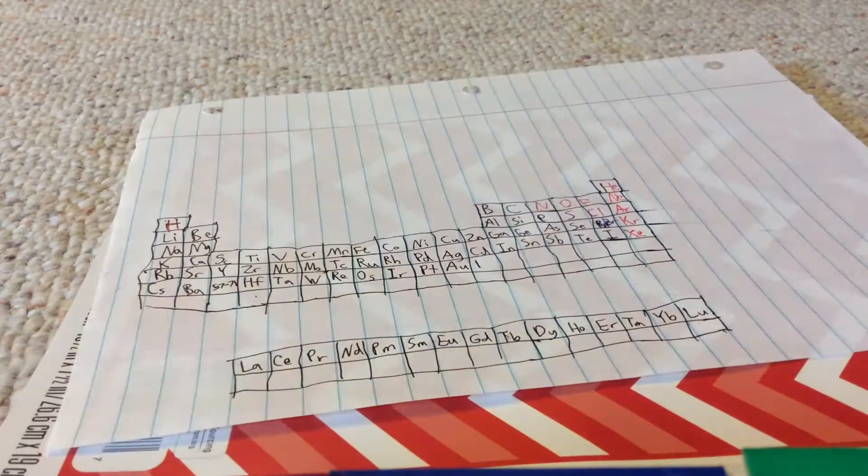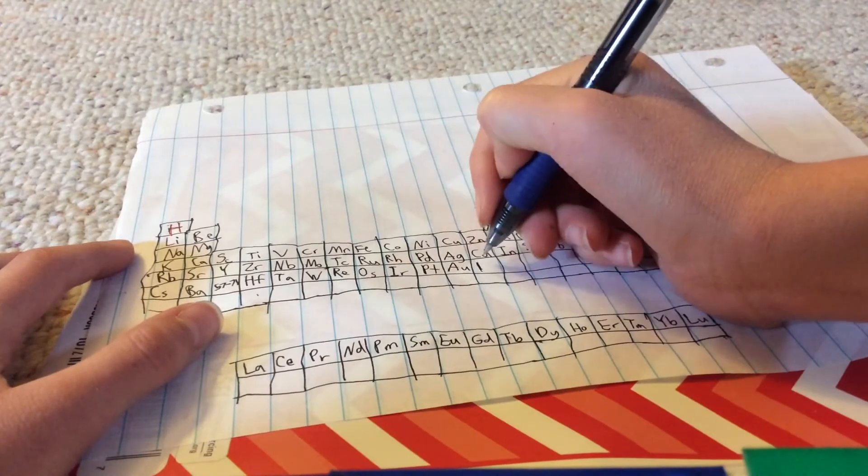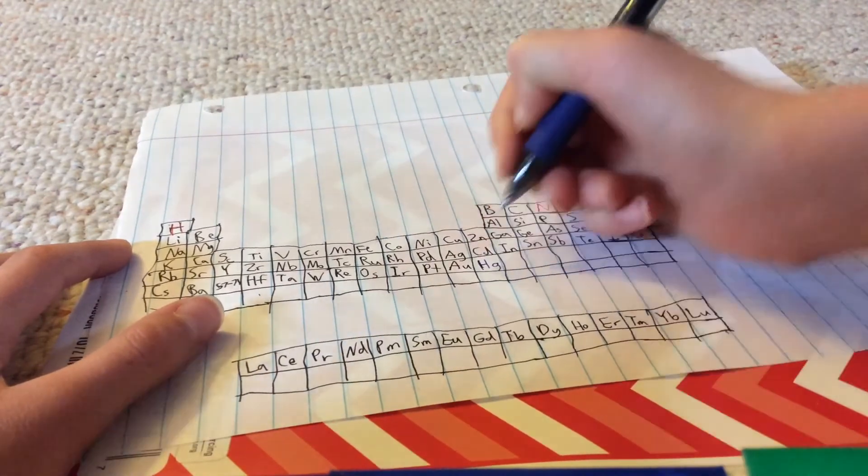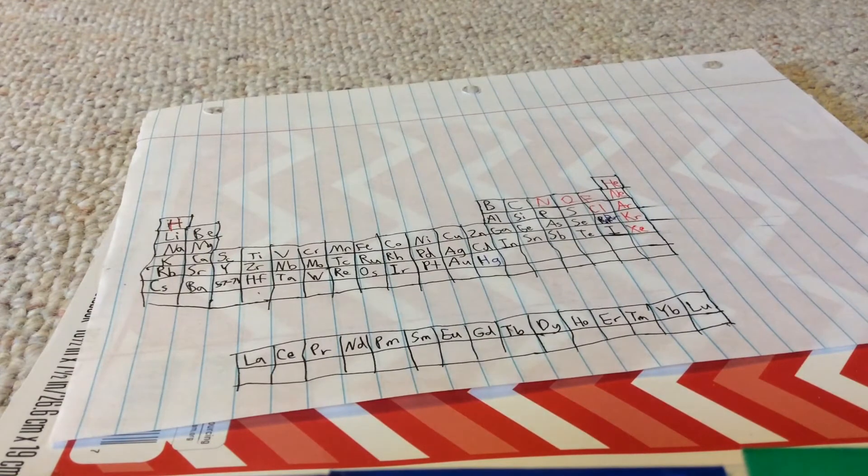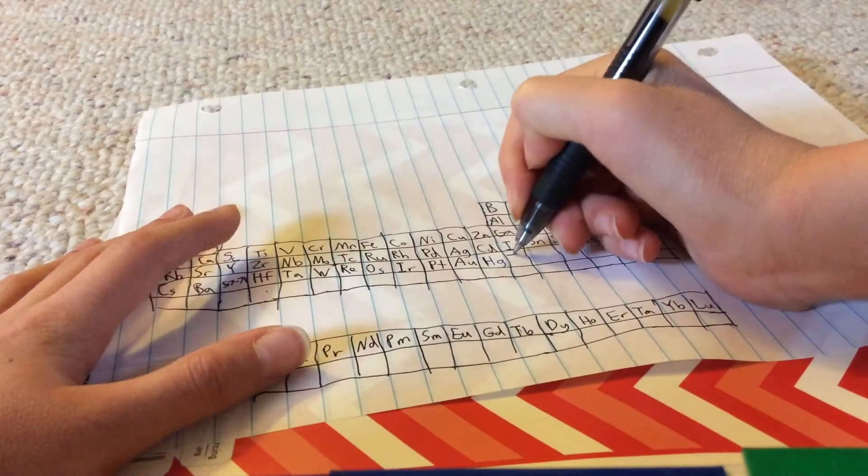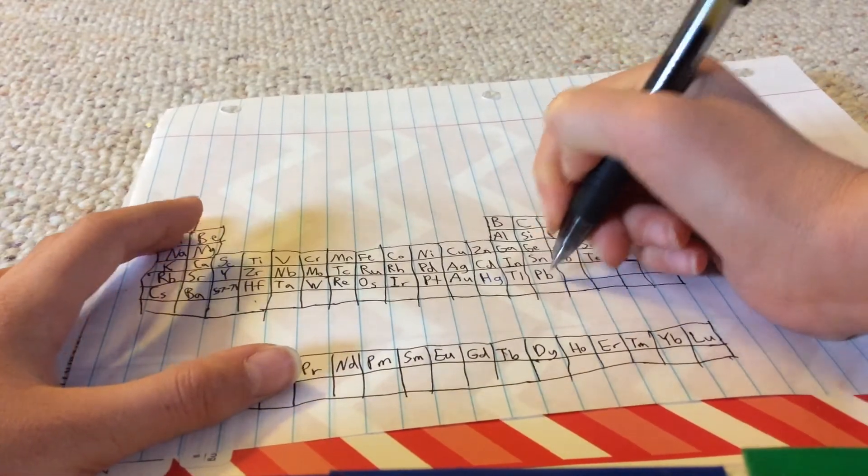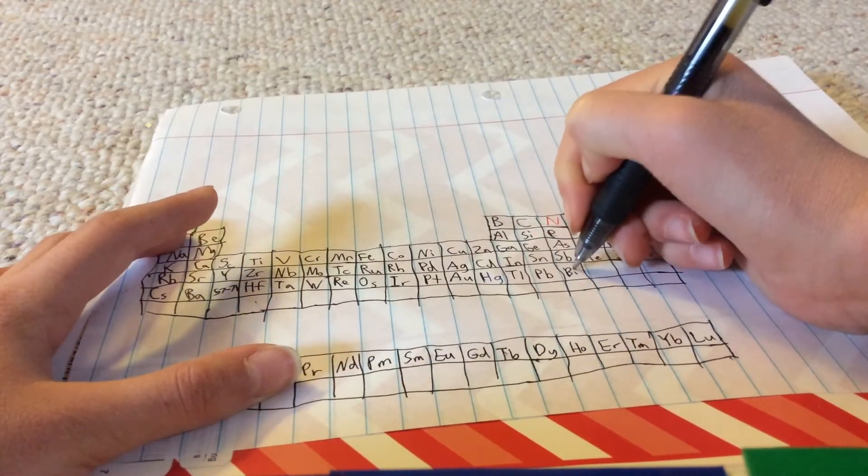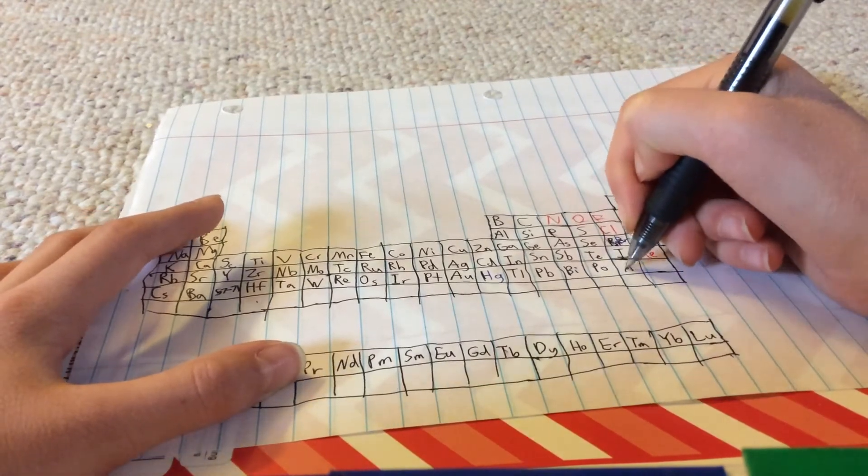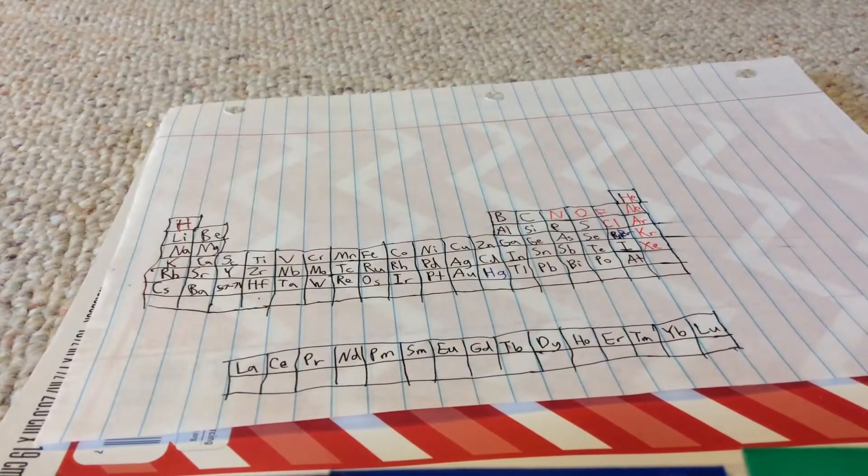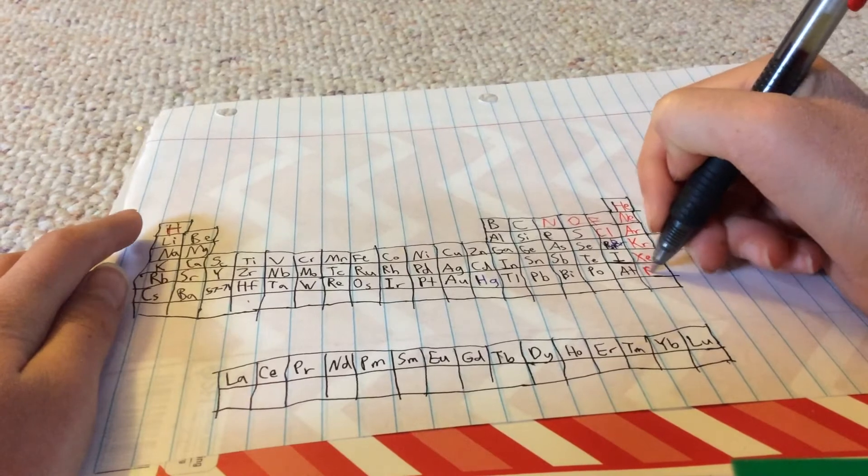I don't want to forget, mercury is a liquid. Mercury, thallium, lead, bismuth, polonium, astatine, and our final gas is radon.